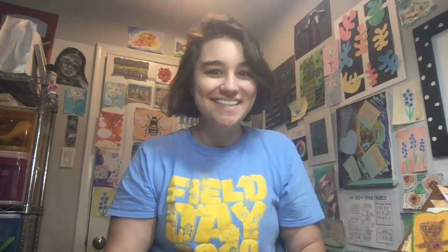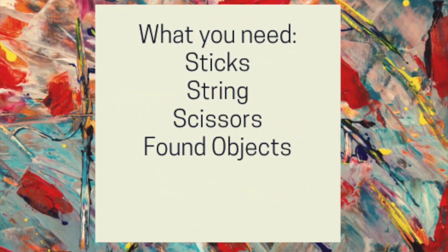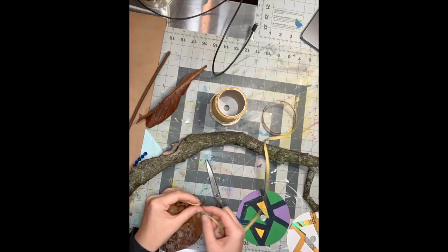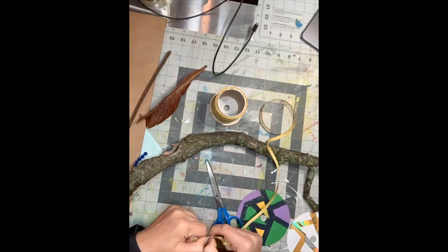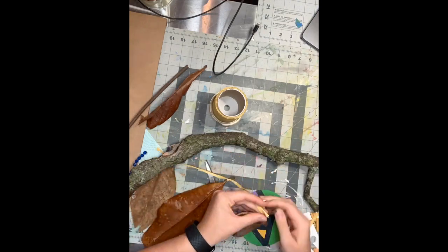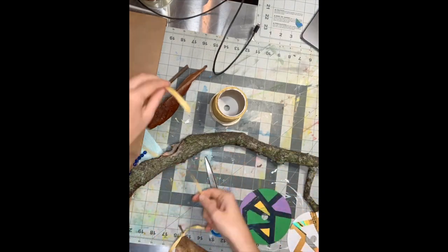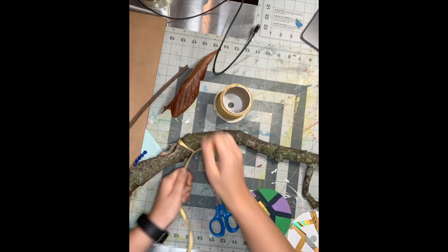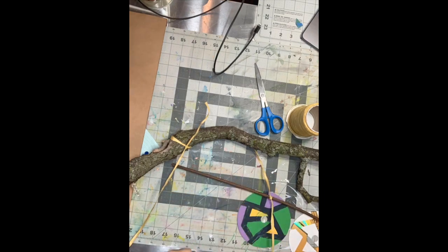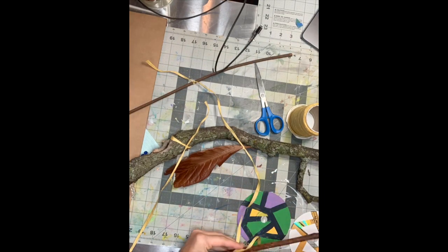We're going to be making mobiles that you guys can hang outside with found objects. This is what you'll need. When creating your mobile, make sure that you tie different levels of your found objects. Also, make sure that you tie them securely so that when it blows in the wind, nothing falls off.